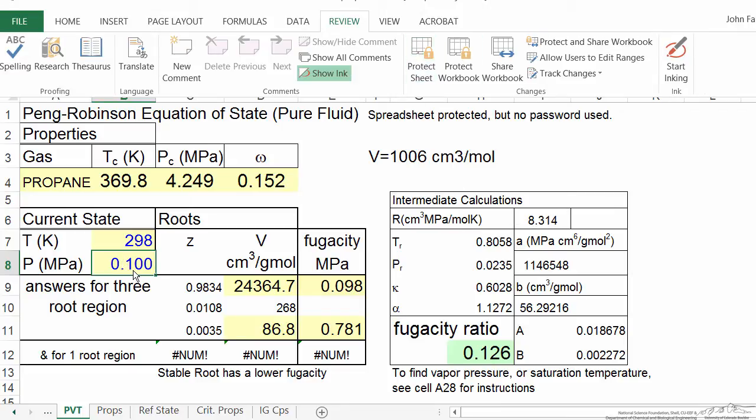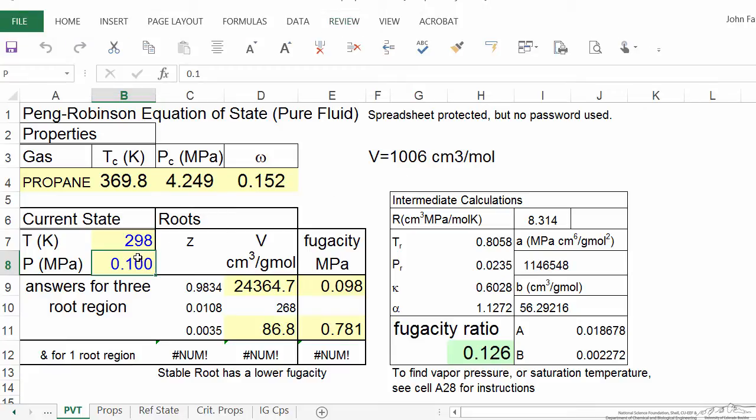I guessed 0.1 MPa. The volume of my system is 1006, and you can see at this condition the vapor volume is much larger than that. Since the vapor fugacity is lower, at these conditions we're in the vapor phase with much too large a volume. Let's increase the pressure. Still in the vapor phase, still too large. Let's double it again.